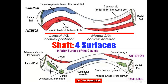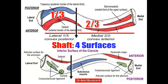The medial end articulates with the manubrium to form the sternoclavicular joint, which is a saddle synovial joint. The lateral end articulates with the acromion to form the acromioclavicular joint, which is a plane synovial joint. The shaft is divided into medial two-thirds and lateral one-third; the medial two-thirds are convex anteriorly, the lateral one-third is convex posteriorly.